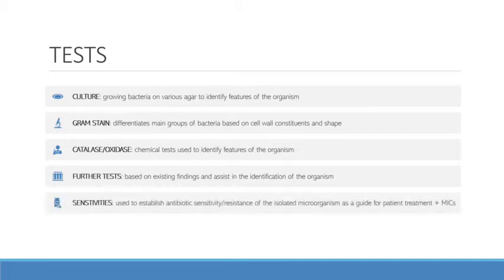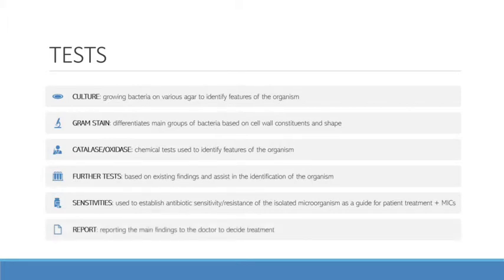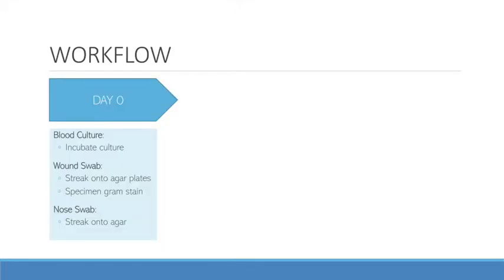Sensitivities refer to antibiotic testing which determines what drugs can be used in treatment. Throughout this process, all tests and results are documented onto a laboratory report, from which the main findings are conveyed on a doctor's report. On day zero, the day we received the specimen, we set up different tests depending on the specimen type. The blood cultures were immediately incubated to allow for the detection of bacterial growth. A direct gram stain was performed from the wound swab itself. The wound and nose swabs were then streaked onto agar plates — HPA, MacConkey agar, and anaerobic HPA — which were then incubated.